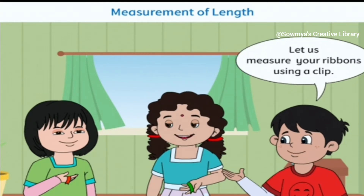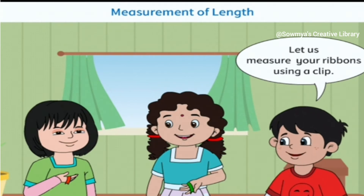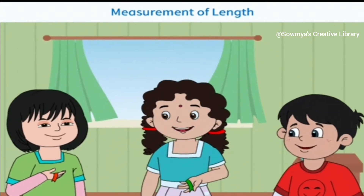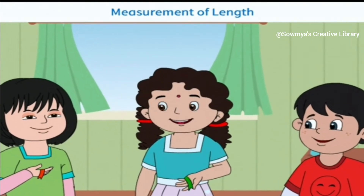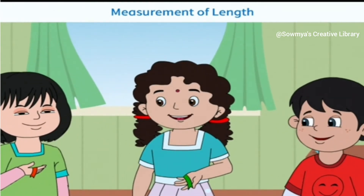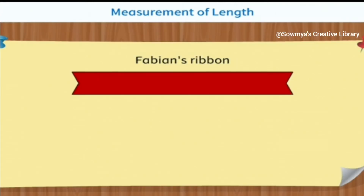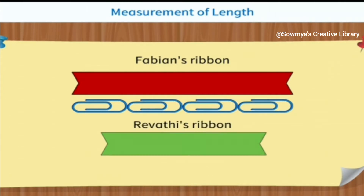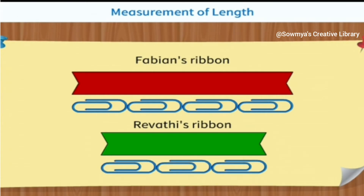Let us measure your ribbons using a clip. We can measure length by using certain means such as toothpick, gem, clip, etc. Fabia's ribbon is about 4 clips long. Revati's ribbon is about 3 clips long. So Fabia's ribbon is longer.